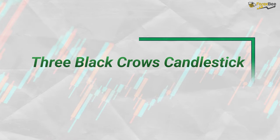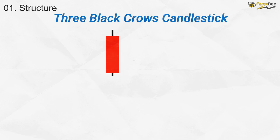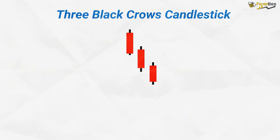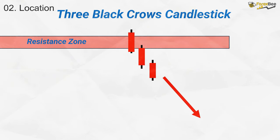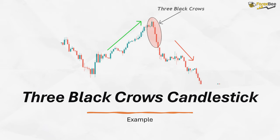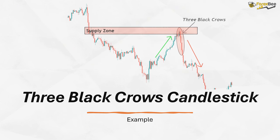Now, let's explore the three black crows candlestick pattern. This pattern is composed of three consecutive bearish candles, each opening within or near the previous candle's body and closing progressively lower. Each candle has small wicks, indicating strong downward momentum with minimal buying pressure. The three black crows pattern serves as a powerful bearish reversal signal and typically forms at a resistance or supply zone, marking the potential start of a prolonged downtrend. In the example, we can clearly see the formation of the three black crows pattern followed by a consistent downward trend. We can also observe its formation at a key supply zone, where each of the three bearish candles opens near the previous candle's body and closes progressively lower, signaling the exhaustion of bullish momentum.